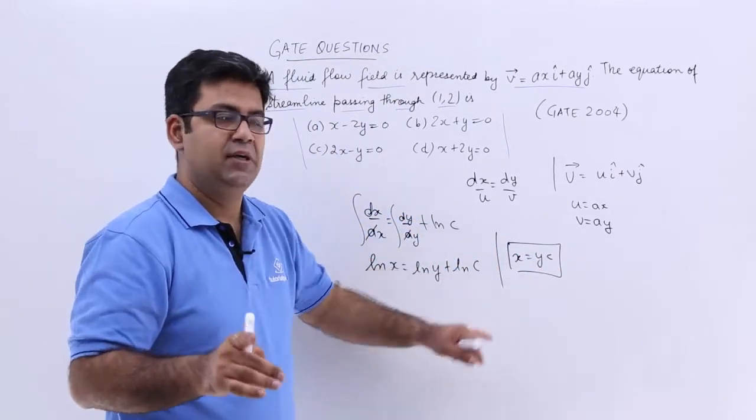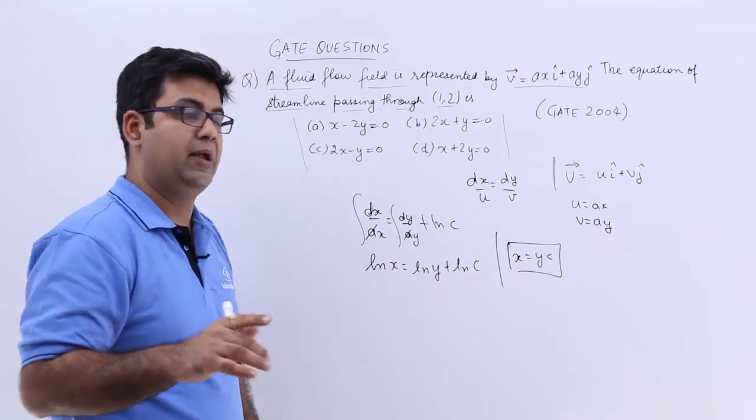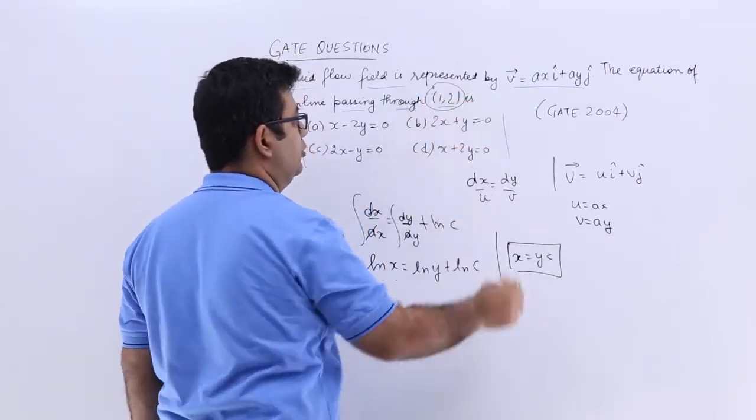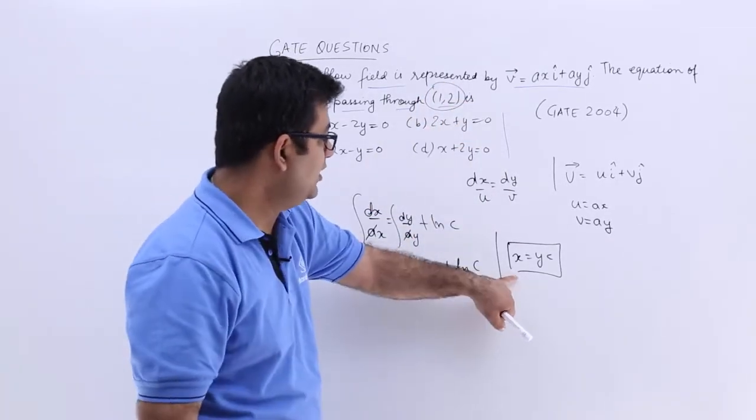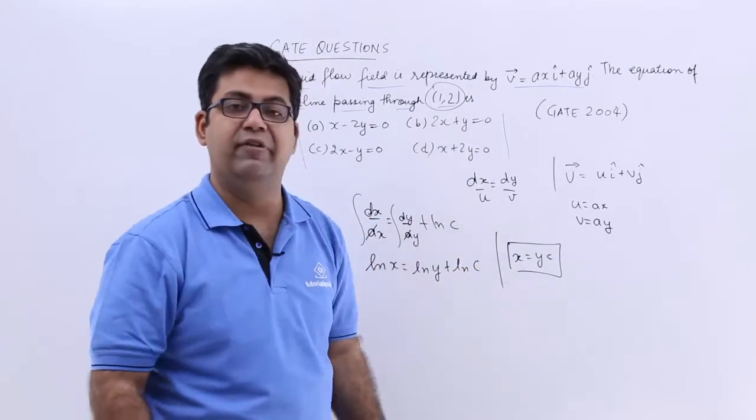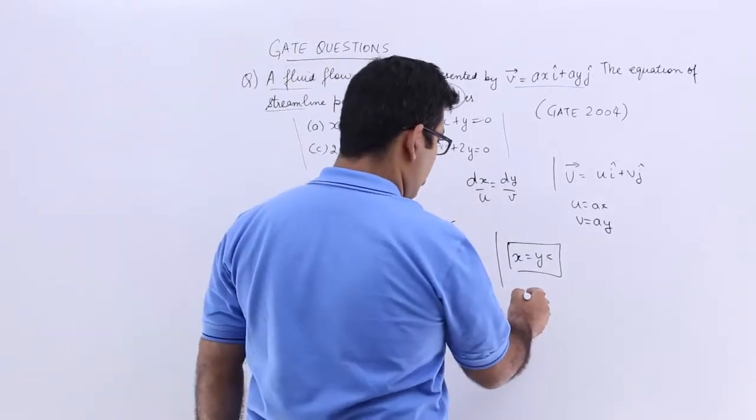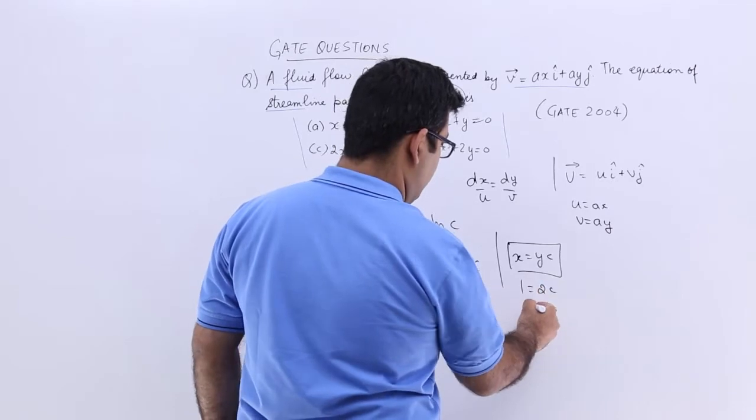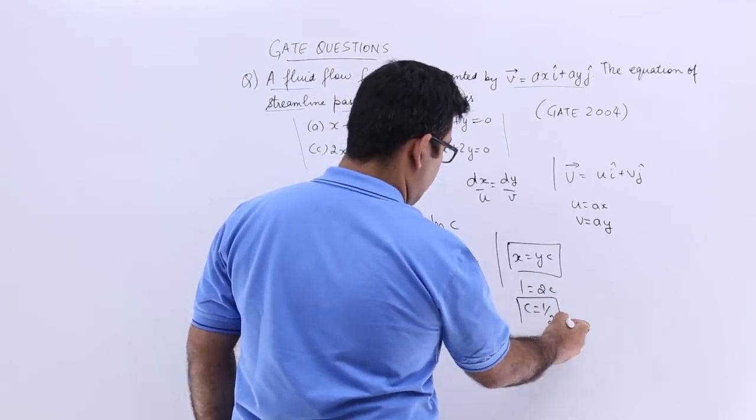Now the point through which this streamline is passing is (1,2). So I will put x equal to 1 and y equal to 2 to find out the value for c. So you will get 1 is equal to 2c, or c will be equal to 1 by 2.